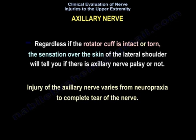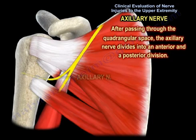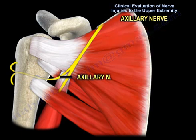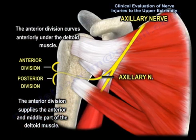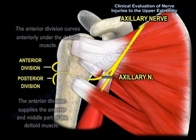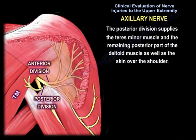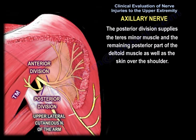Injury of the axillary nerve varies from neuropraxia to complete tear of the nerve. After passing through the quadrangular space, the axillary nerve divides into an anterior and a posterior division. The anterior division curves anteriorly under the deltoid muscle and supplies the anterior and middle part of the deltoid muscle, with the posterior division supplying the remaining posterior part of the deltoid muscle as well as the skin over the shoulder.